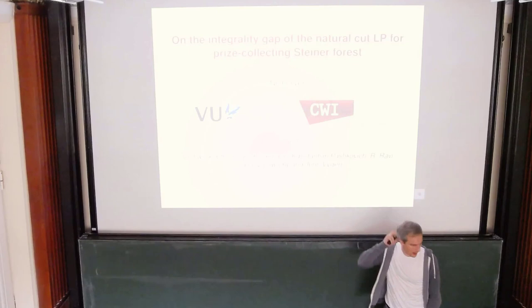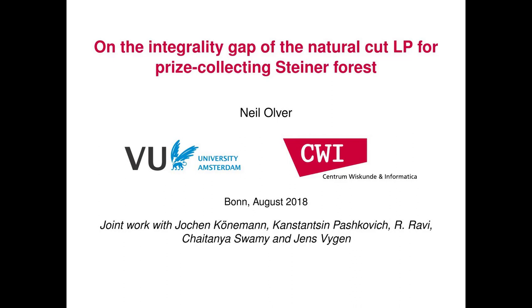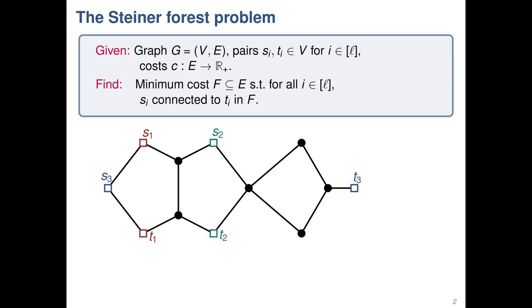I wanted to talk about this since it started during the trimester program here. So it's on the prize-collecting Steiner forest problem. Just to remind ourselves, in the normal Steiner forest problem, we're given an undirected graph with costs on the edges, and a bunch of terminal pairs S1, T1, S2, T2, and so on. We want to buy a subset of edges that connects all the terminal pairs at minimum cost.